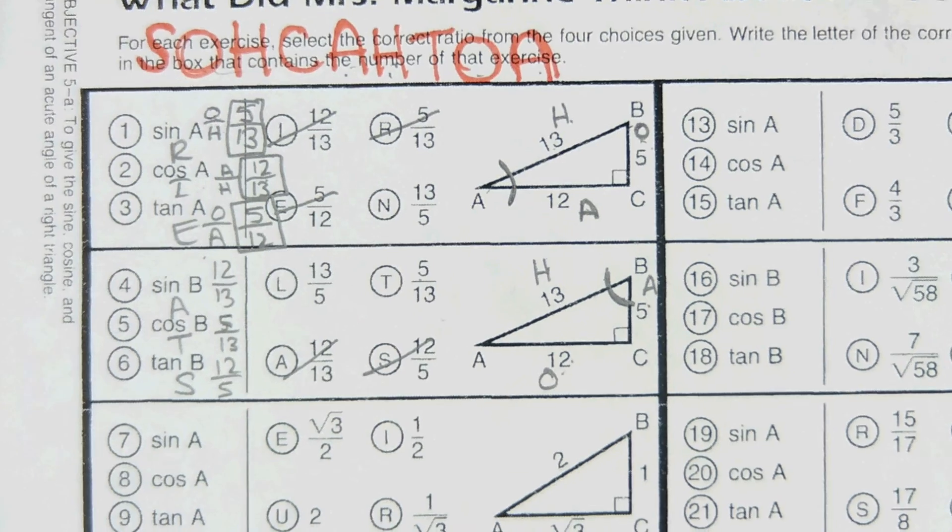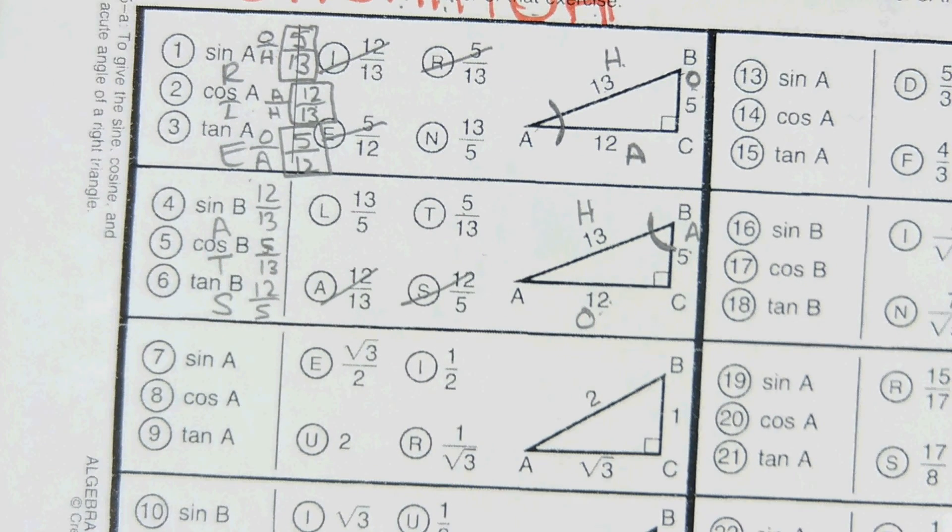And then tangent is opposite over adjacent, 12 over 5, S.